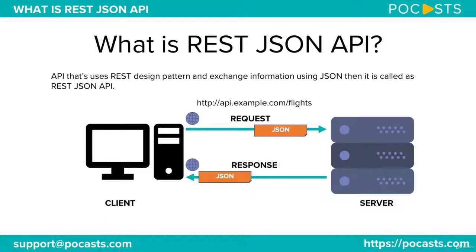So REST JSON API is just a term to show that REST API is used to exchange messages, and the message format is JSON. There's nothing special about it — it's three different topics combined together to show the representation of how messages are exchanged from one system to another system.